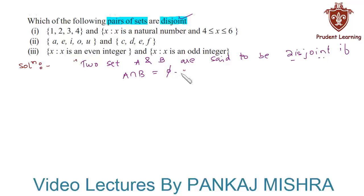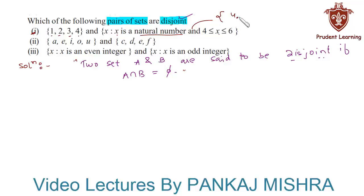Keeping this concept in mind, let us solve each section one by one. In the first section, we have a set containing elements 1, 2, 3, and 4, and a set of x such that x is a natural number and x is greater than or equal to 4 and less than or equal to 6. If we write this set in roster form, we get elements 4, 5, and 6. Both sets have 4 in common, so their intersection is not a null set.